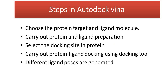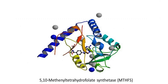In today's tutorial, we are going to use the example of MTHFS, which is 5,10-methylene tetrahydrofolate synthetase. This is an enzyme that regulates the flow of carbon through a one-carbon metabolic network, which supplies essential components for the growth and proliferation of cancer cells. Inhibition of MTHFS in human MCF7 breast cancer cells has been shown to arrest the growth of cancer cells. Therefore, we will use MTHFS as the target molecule in the present study.